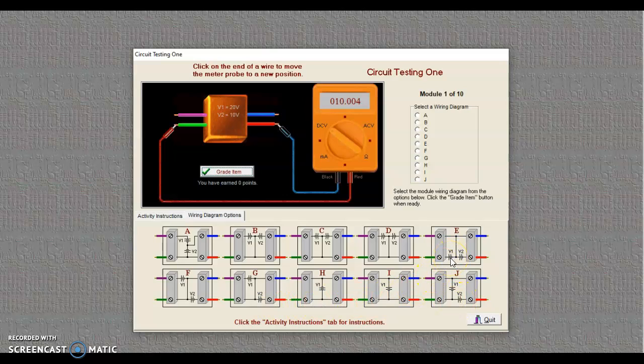Now, looking at E, I have V1, which is a positive 20. And V2, which is a positive 10. And 20 plus 10 is 30. So E is not an option. I'm left with one of these three down here.